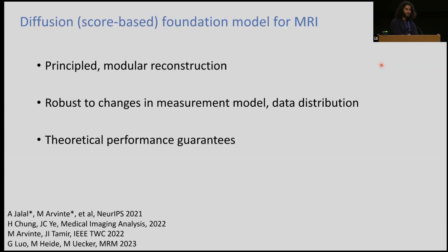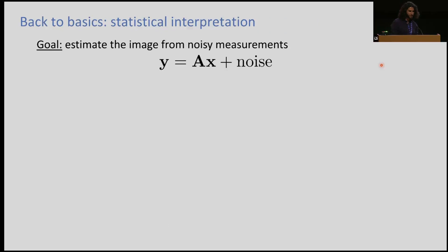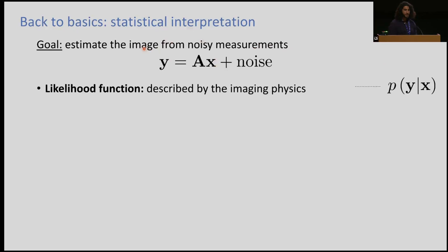I argue that for MRI, this is a really attractive approach for foundation models. We've developed a diffusion or score-based foundation model for MRI. Here, diffusion doesn't refer to the contrast — it refers to the type of sampling process that goes from an arbitrary noise-like image to a prior sample from our distribution. Using this concept, we can develop principled modular reconstruction methods that are robust to changes in the measurement models and the distribution by design, and could also have theoretical performance guarantees, much like what we'd see in the theory of conventional optimization.